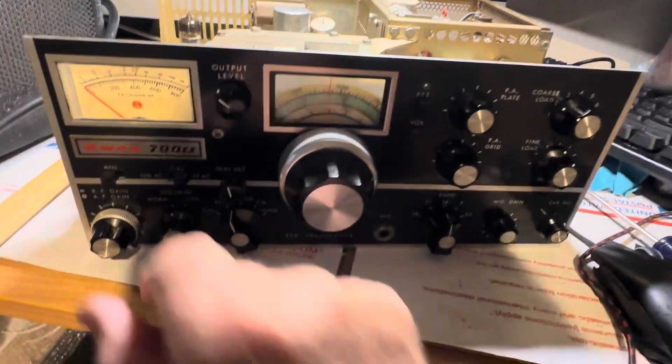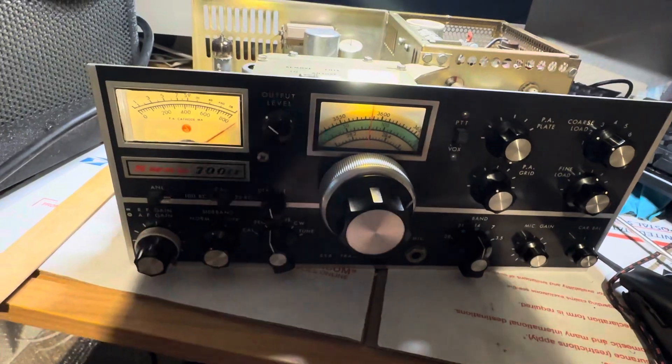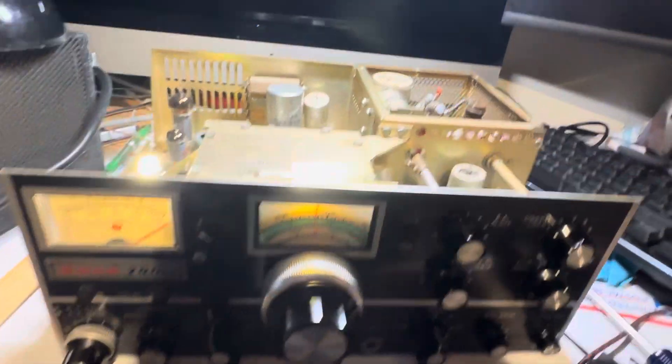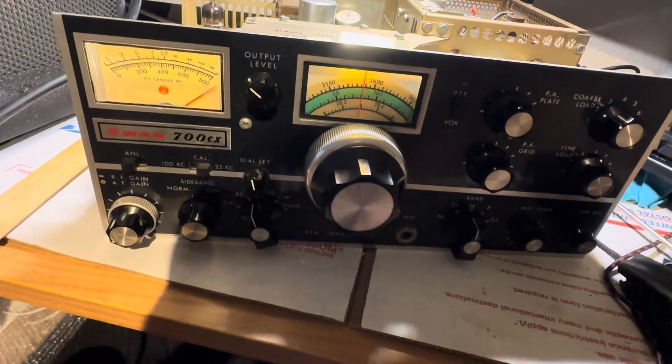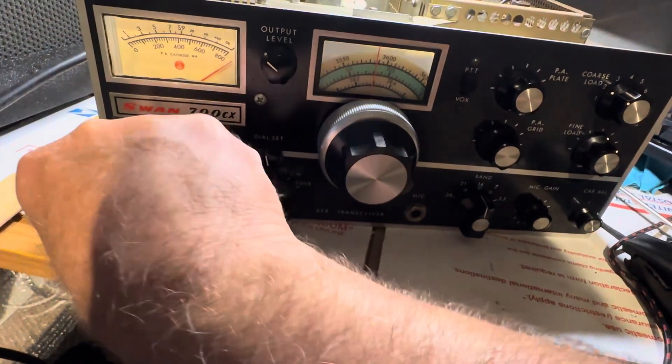So anyway power up the radio. At this point there's 900 volts on that cap there. Now if this was a linear amplifier we would turn it off. You'd probably want to unplug the plug just in case from the wall socket like that.